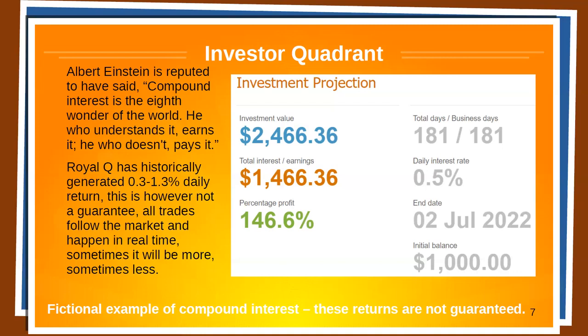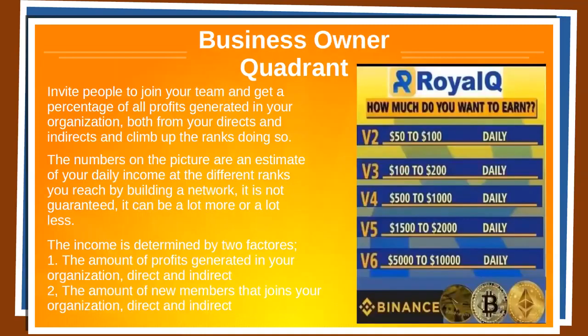Royal Q has historically generated 0.3 to 1.3% daily return. This is not a guarantee — all trades follow the market and happen in real time; sometimes it will be more, sometimes less.